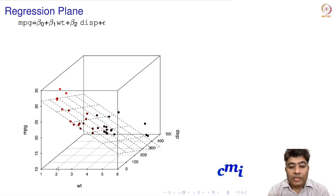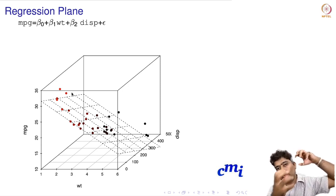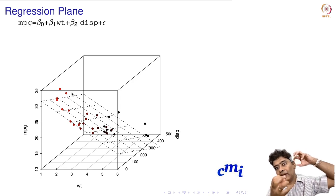On this axis is displacement, this is weight, and this axis is miles per gallon. Naturally, all the points we're seeing are in three dimensions. If you imagine yourself in a room where the x-axis is weight, y-axis is displacement, and z-axis is miles per gallon, all these points are hanging somewhere in the three-dimensional space.